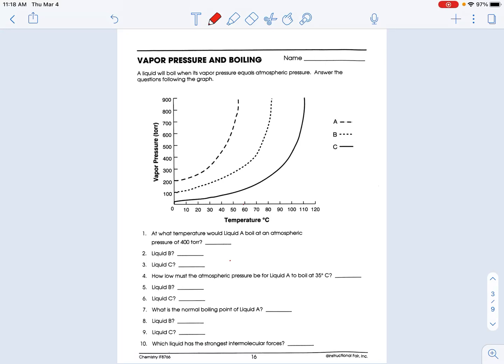Okay, so this is a page on vapor pressure and boiling. A liquid will boil when its vapor pressure equals atmospheric pressure. Answer the questions following the graph.